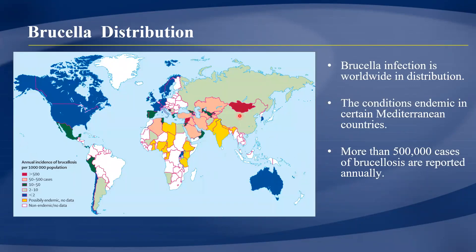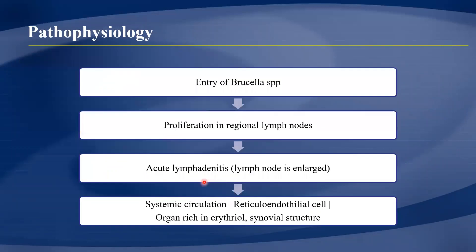Brucella affects most countries worldwide, but it is very rare in some areas. In the Americas, for example, it is rare due to good public health systems, animal inspection, and proper milk pasteurization. However, in parts of Africa this condition is endemic.